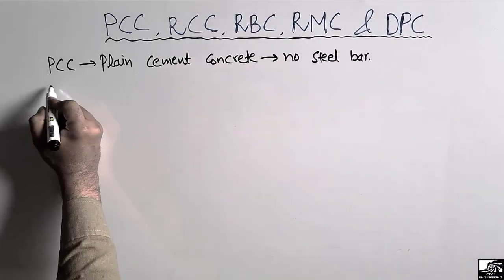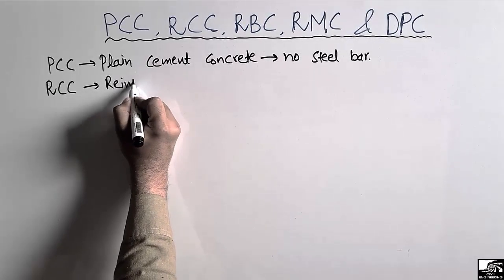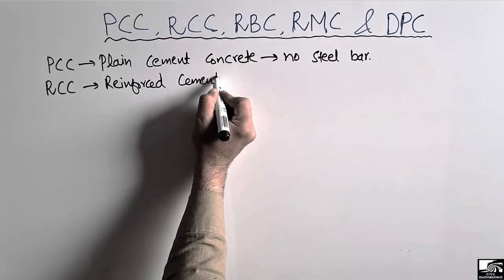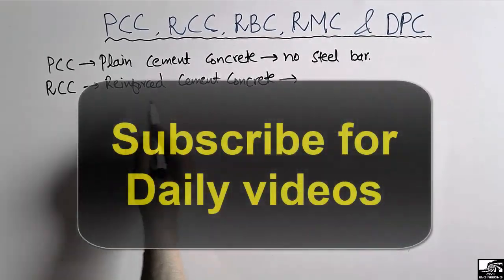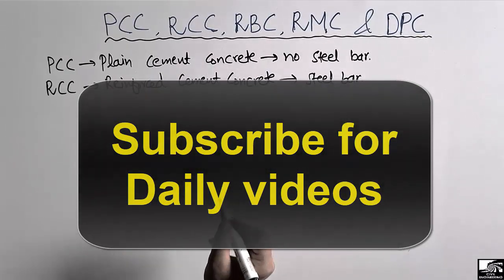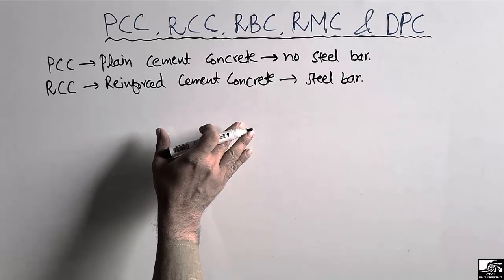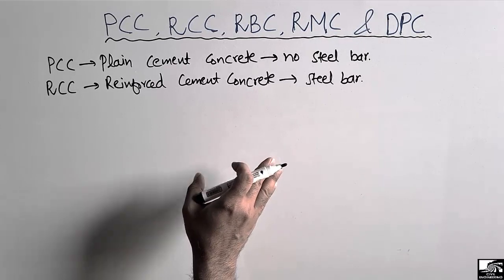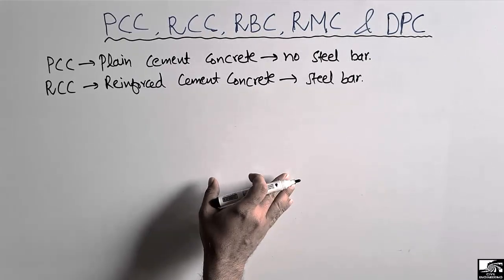The second term is RCC, known as Reinforced Cement Concrete. It is quite different from PCC — in this type of concrete we use steel bars to resist tension and also to increase the load capacity of the structure. It is mostly used in the construction of mega structures like bridges, dams, offices, hospitals, and schools.